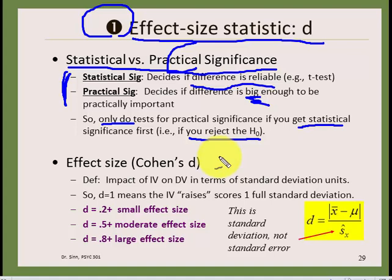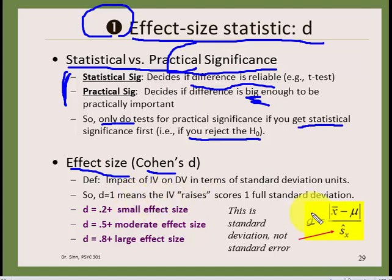A simple example: let's say you want to improve your GRE scores to get into graduate school. Somebody says you can take their training program and your scores will go higher, but it costs five hundred dollars. The next logical question is: how much are my scores actually going to improve? The d statistic, created by Cohen, quantifies the difference caused by a treatment effect in terms of standard deviation units.